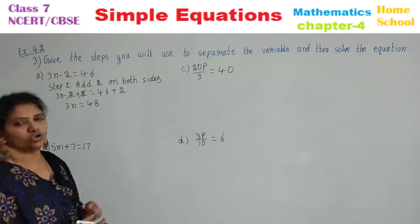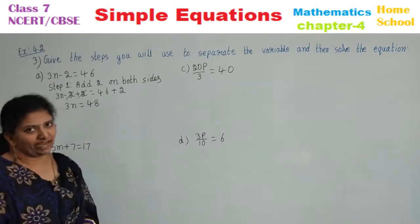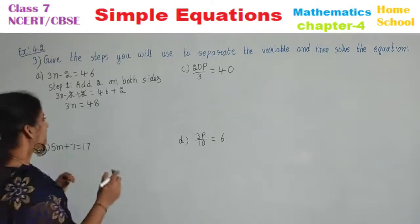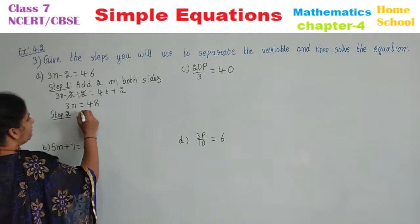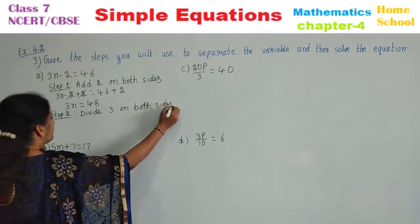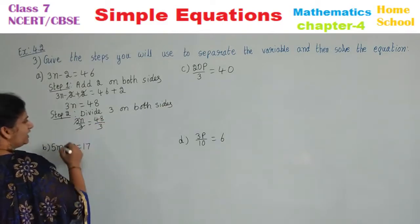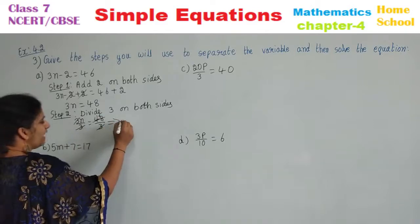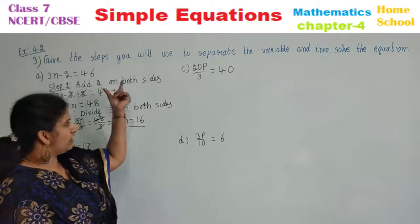Next step: 3N is equal to 48. We have a variable N followed with a number that is multiplied. Number multiplied means we need to divide with that number to get the value of the variable. Step 2: Divide 3 on both sides. 3N by 3 is equal to 48 by 3. 3 and 3 cancel. 3 sixes are 18 — it implies N is equal to 16. To get the value of this variable, we need to solve these two steps.